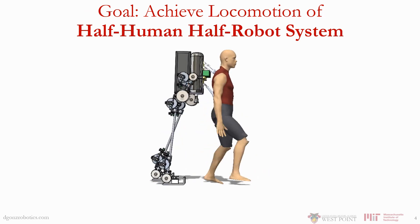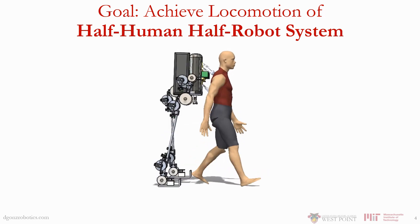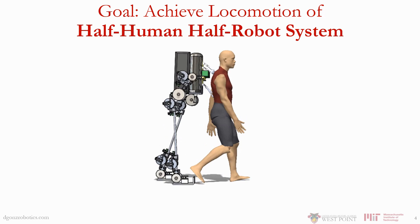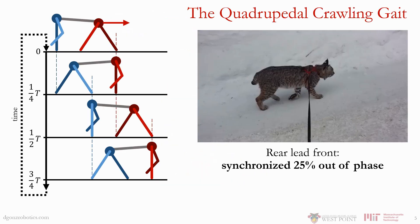This is difficult, however, because the robot cannot control the human directly, and vice versa. But we can get these two halves to synchronize naturally, without control, using a very special gait cycle found in nature.